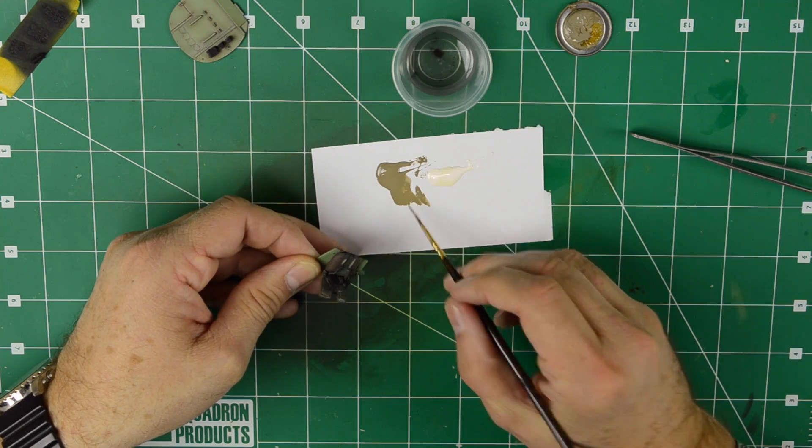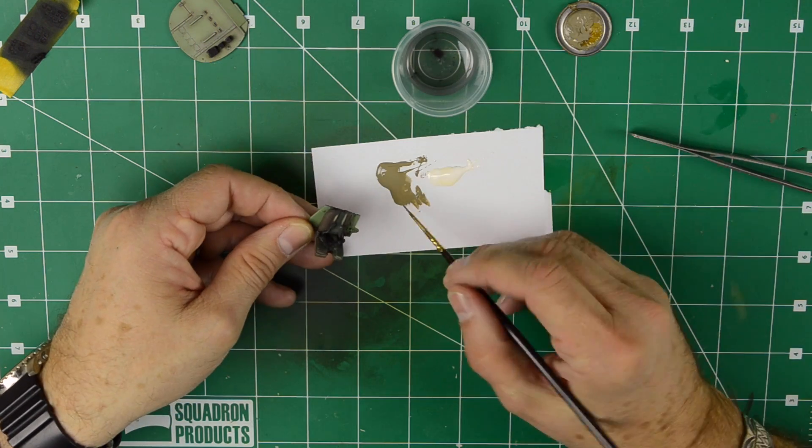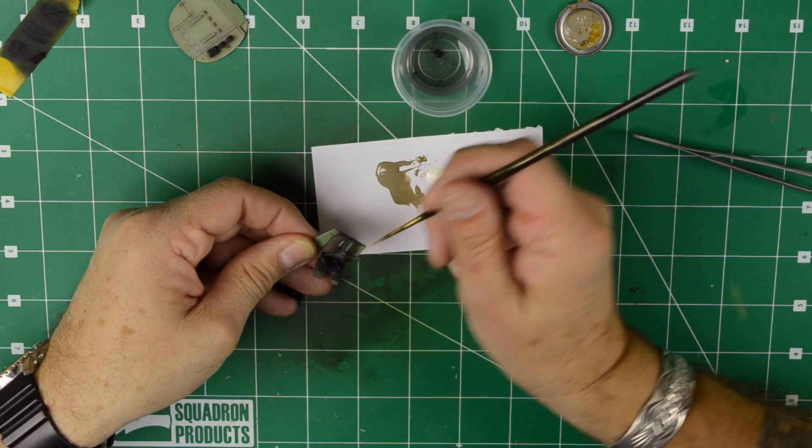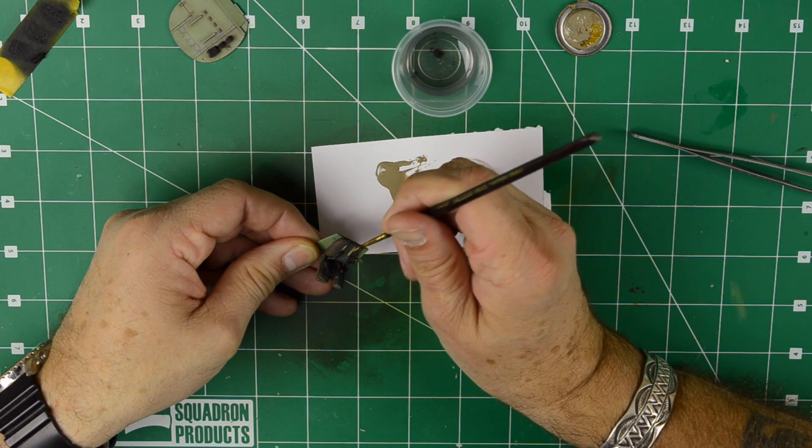So first I'm going to do a plain khaki drill. Afterwards I'm going to add some layers with khaki drill mixed with white to make it lighter and to get a depth effect.